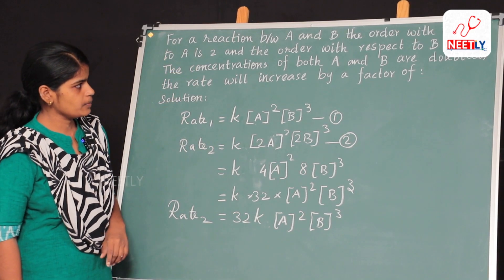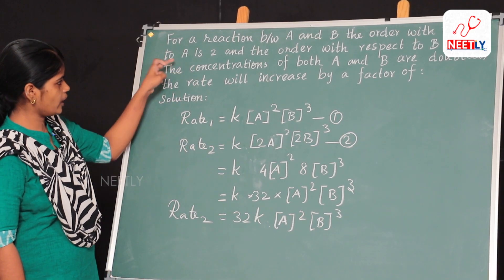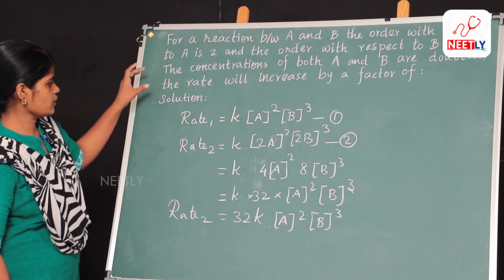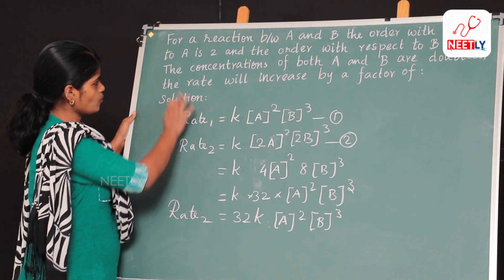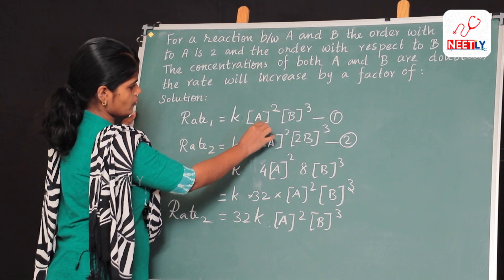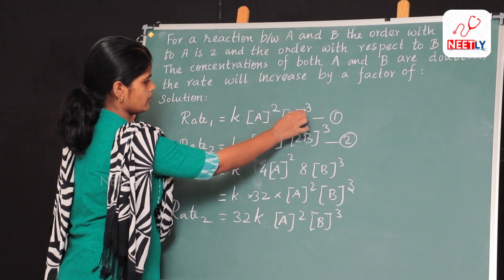So here for a reaction between A and B, the order with respect to A is 2 and the order with respect to B is 3. So if we write the rate law for this one, rate 1 is equal to K, the concentration of A to the power 2 and the concentration of B to the power 3.